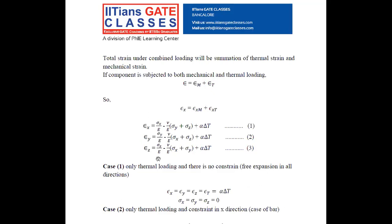These equations cover thermal loading with a tri-axial stress system. Now, to understand thermal stresses further, we consider a few cases. Case 1: only thermal loading with no constraint — meaning the body is free to expand in all directions. For this case, stress in all three directions is zero, but strain in all three directions is due to thermal loading only and equals alpha·ΔT.